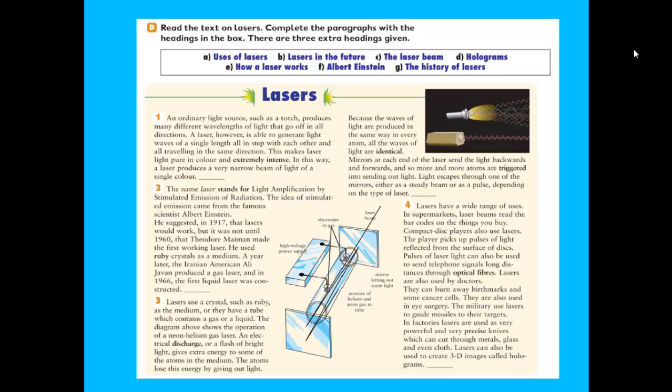Lasers use crystals such as ruby as the medium, or they have a tube which contains a gas or liquid. The diagram above shows the operation of neon helium gas laser. An electrical discharge or flash of bright light gives extra energy to some of the atoms in the medium. The atoms lose this energy by giving out light. Because the waves of light are produced in the same way in every atom, all the waves of light are identical.